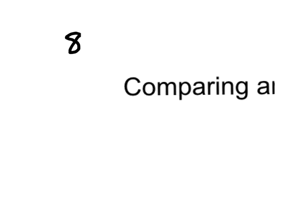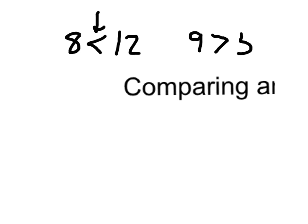When we are talking about comparing numbers, what we're talking about is this: 8 is less than 12, or 9 is greater than 5. Read that number sentence again — 8 is less than 12, or 9 is greater than 5. Again, that is comparing.